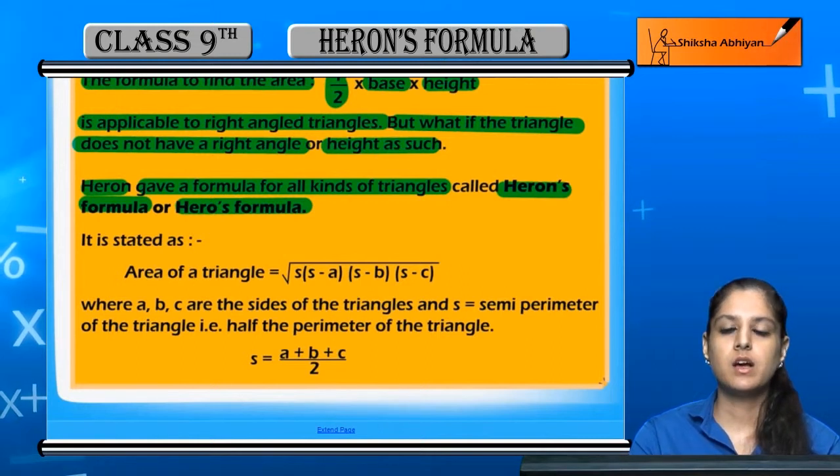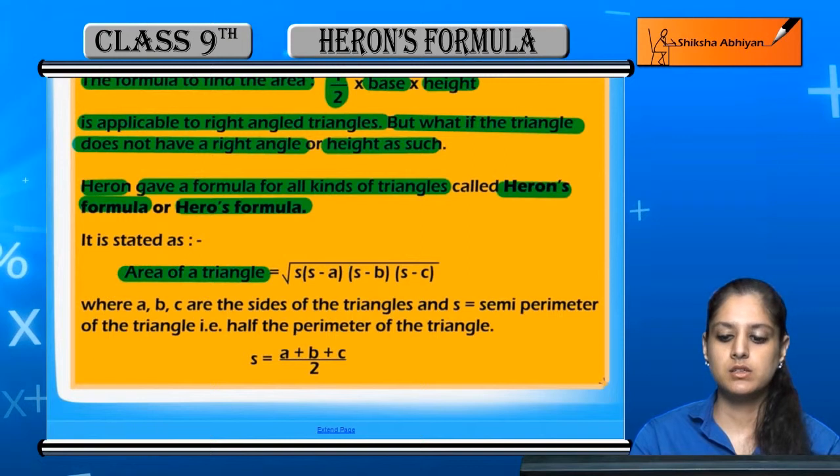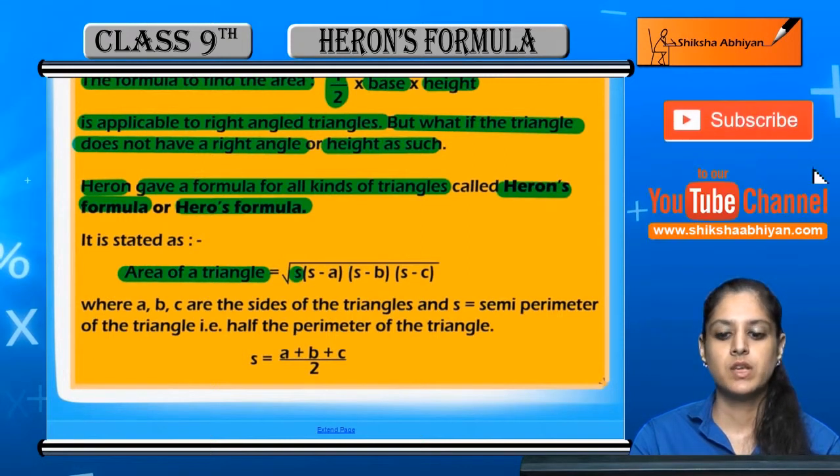And what is this formula? Area of triangle is equal to square root of s into s minus a into s minus b into s minus c.